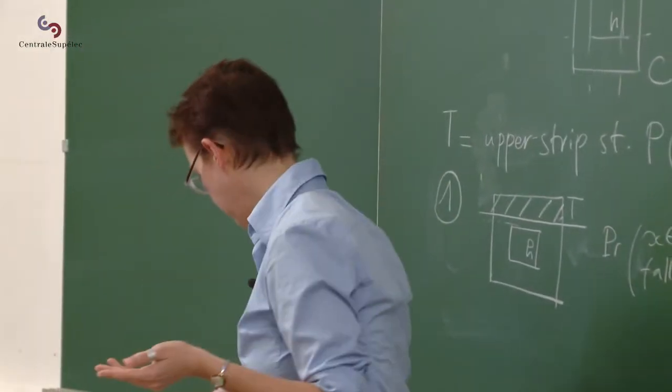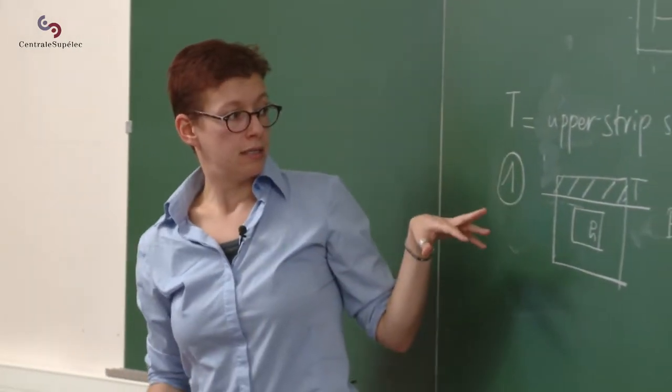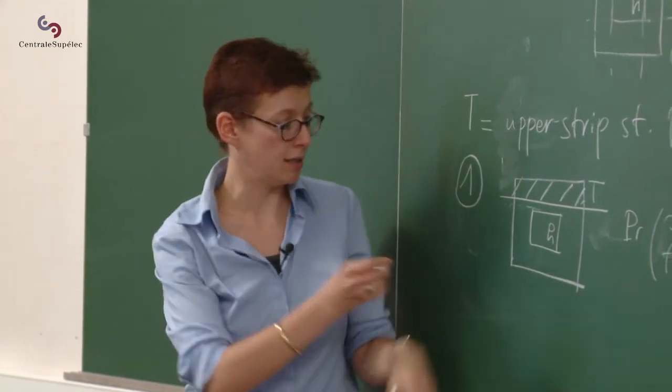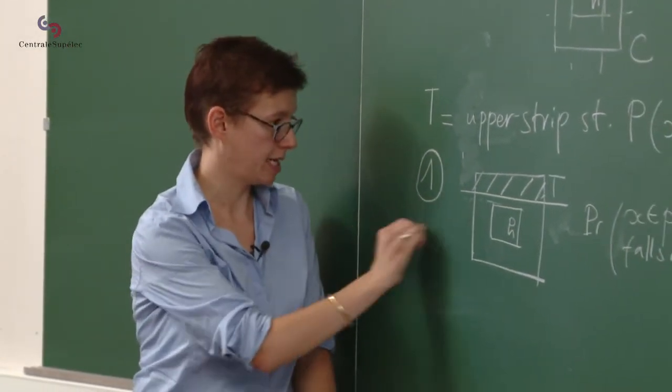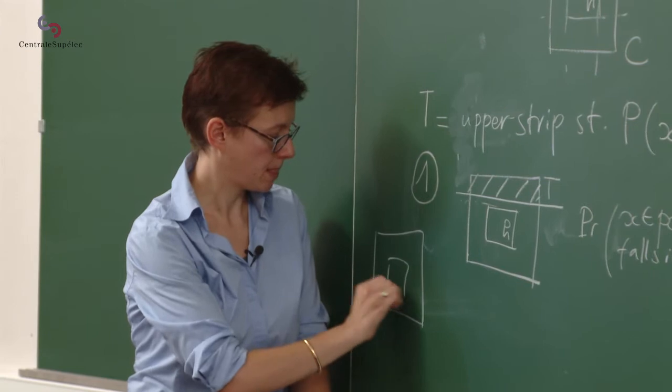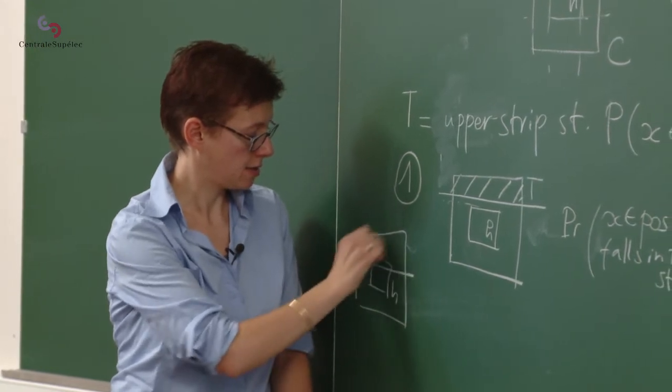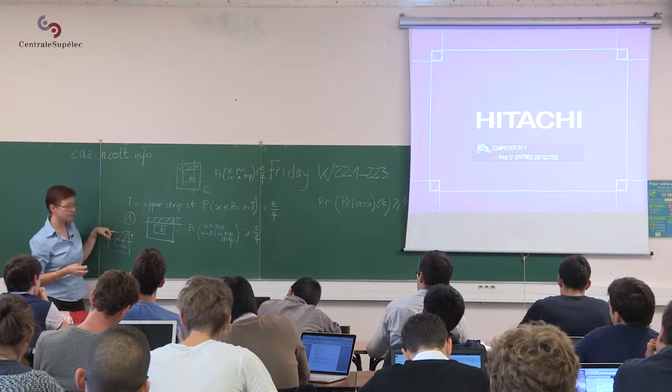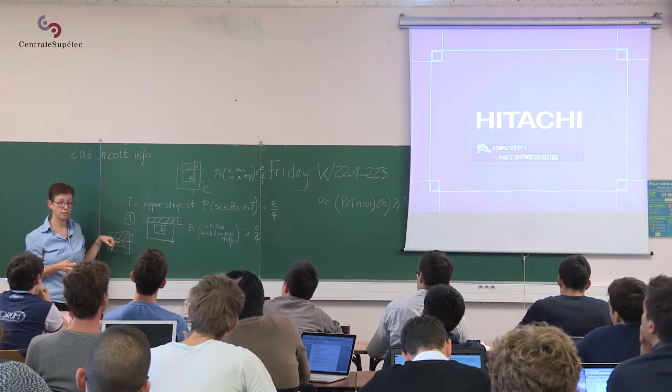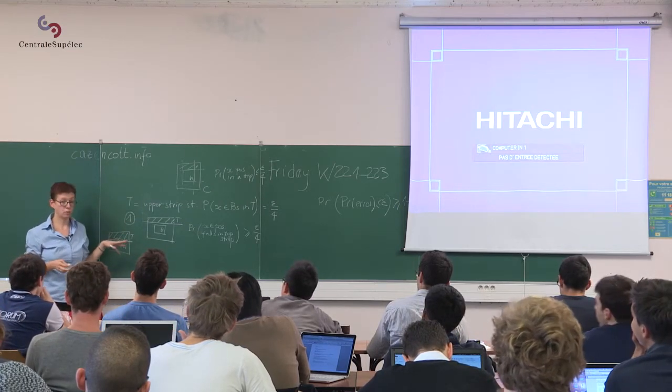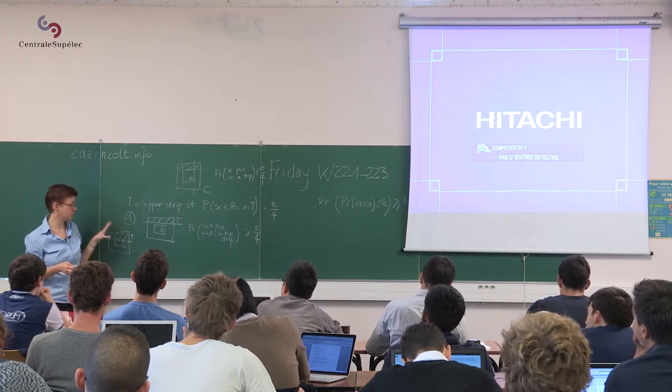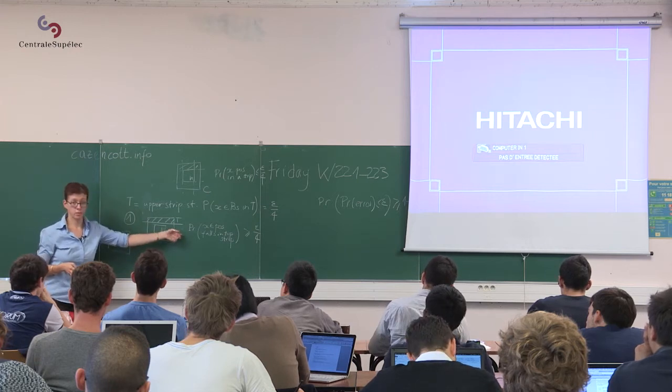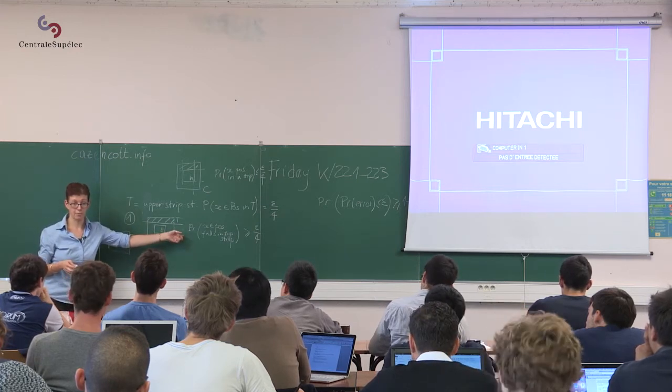Conversely, in the other scenario where T covers H, so the scenario where we have this, since the probability to be between H and C is smaller than epsilon over 4, that's the situation we want. So we're not going to worry about that. We're going to worry about this scenario. That's the scenario we don't want to happen.